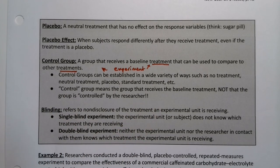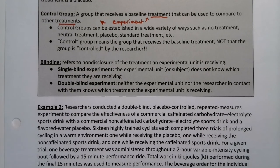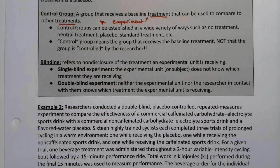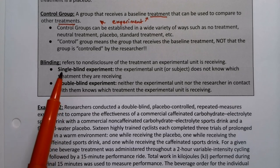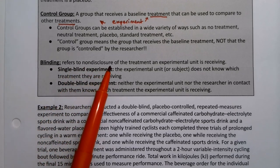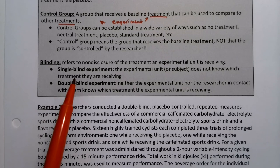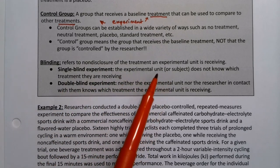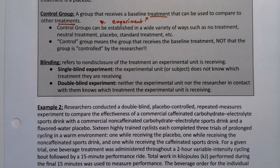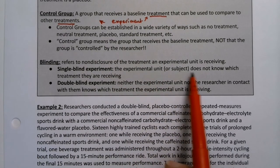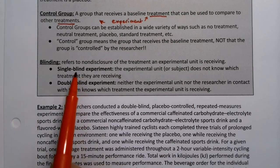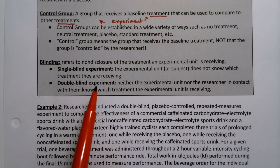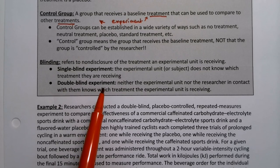Blinding is very important — you'll often hear that the best kind of study is one that is double blind. Blinding itself refers to the non-disclosure of the treatment that experimental units are receiving — they don't tell you what they're giving you. In a single blind experiment, the subject does not know what they're taking. A double blind experiment means that the person giving it to you doesn't know either — so the person taking the pill doesn't know, and the person giving it doesn't know.